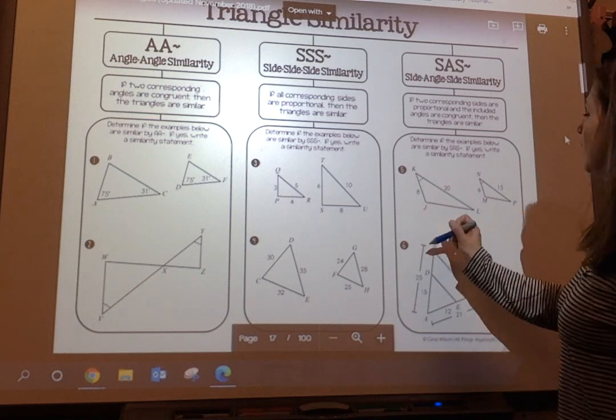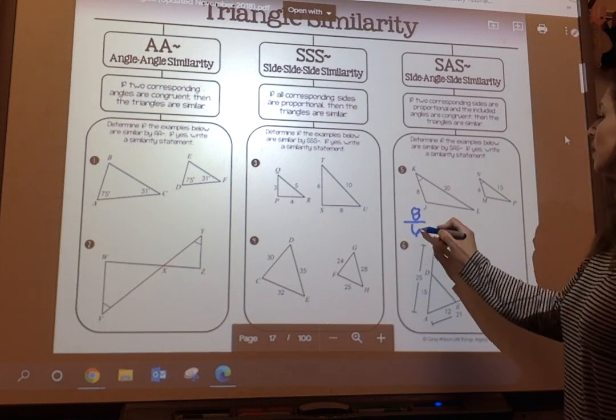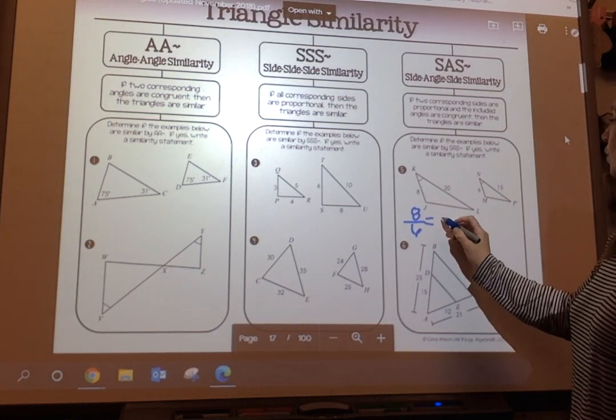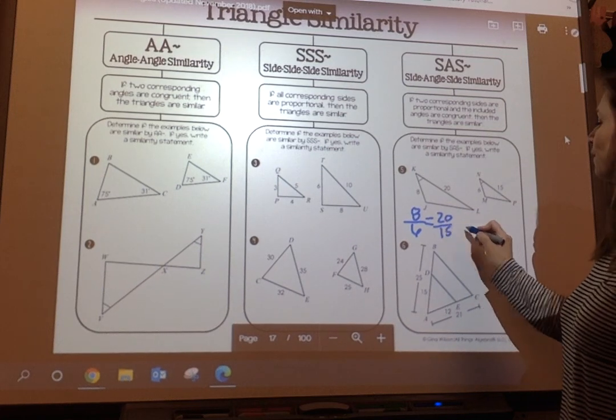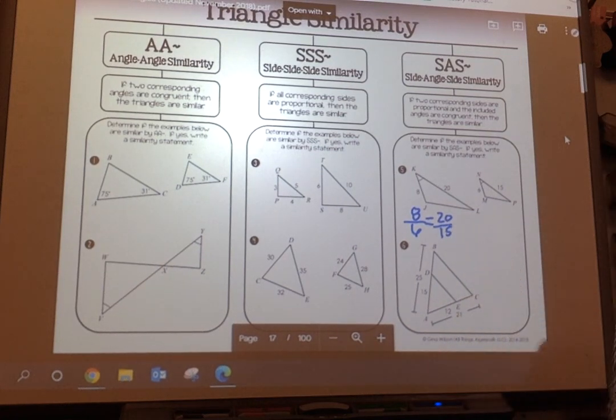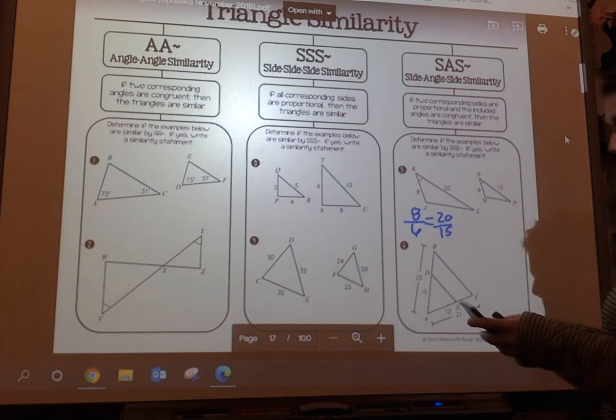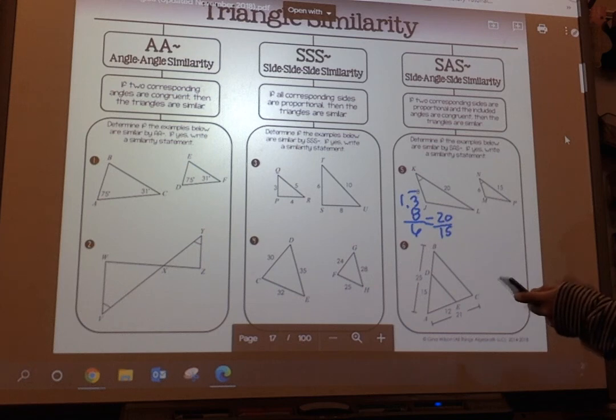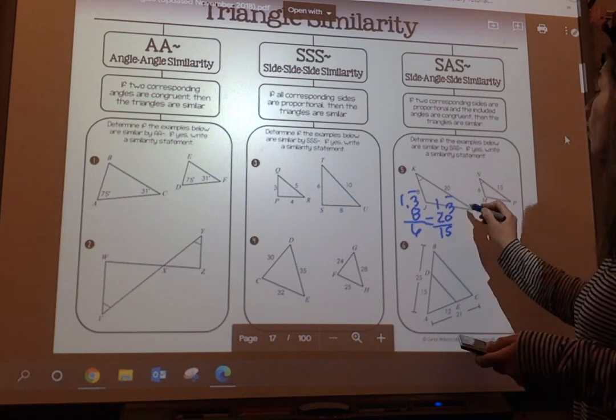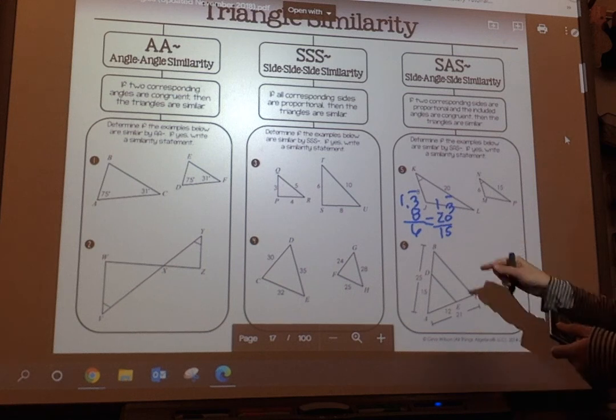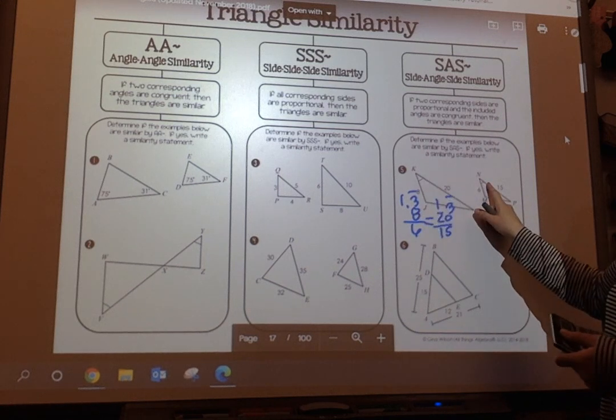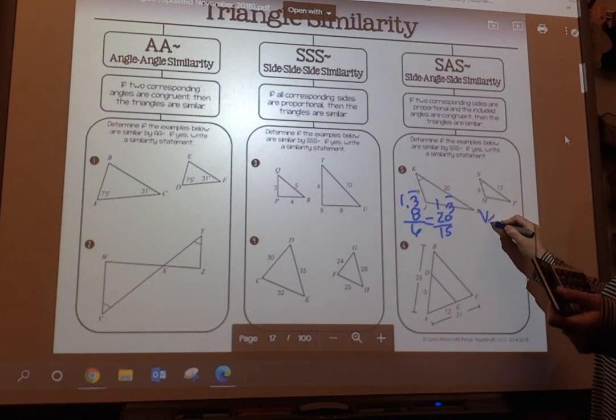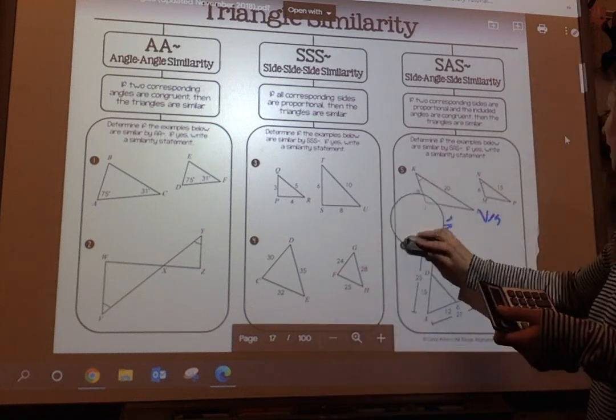So let's test it. Is 8 and 6 proportional to 20 over 15? So 8 divided by 6—again, I know you could easily look at this—8 divided by 6 is 1.3 repeating, and 20 divided by 15 is 1.3 repeating. So my sides are proportional and my angles are congruent, so yes, I can make a proportional statement.